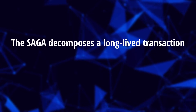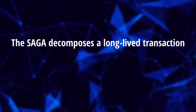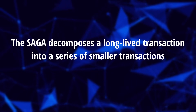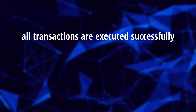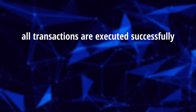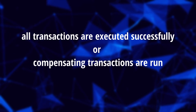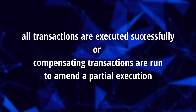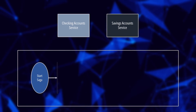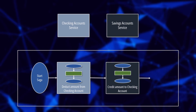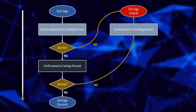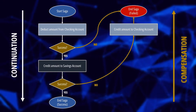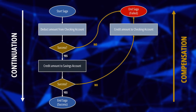The saga is a design pattern that decomposes a long-lived transaction into a series of smaller transactions distributed across multiple processes. It guarantees that either all transactions in a saga are successfully completed, or compensating transactions are run to amend a partial execution. In its happy path, the transaction proceeds from one step to the next until completion. In the case of a step failure, the saga performs compensating actions to take the system back to its original state.